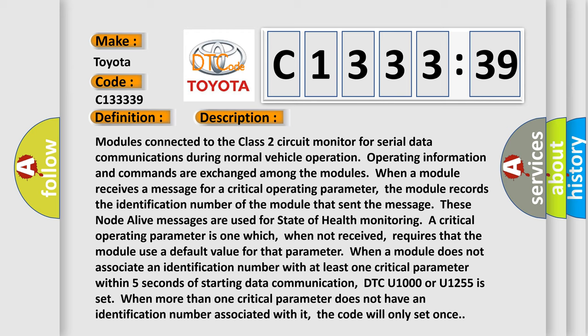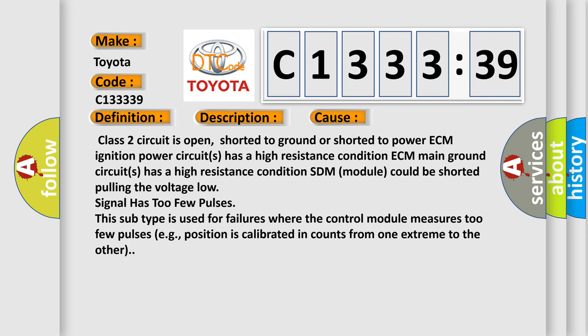A critical operating parameter is one which, when not received, requires that the module use a default value for that parameter. When a module does not associate an identification number with at least one critical parameter within five seconds of starting data communication, DTC U1000 or U1255 is set. When more than one critical parameter does not have an identification number associated with it, the code will only set once.